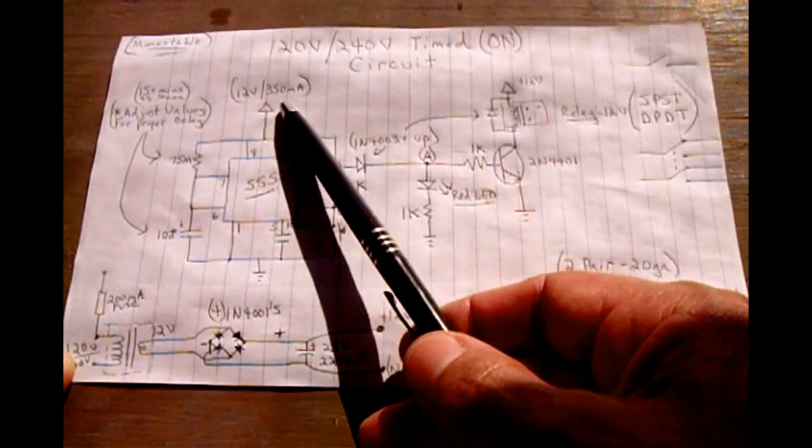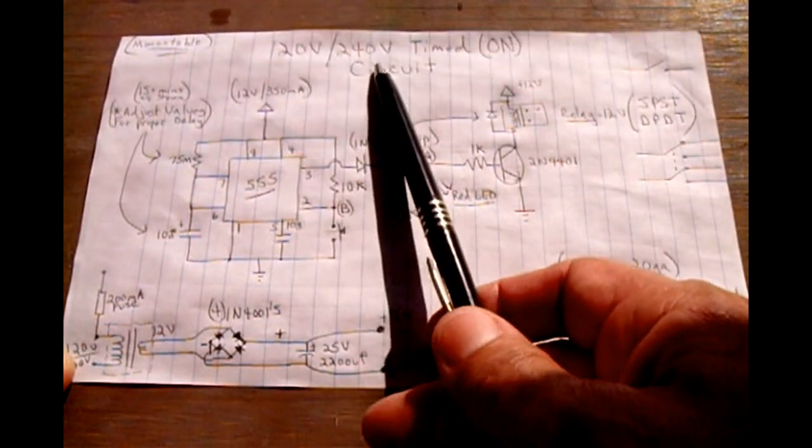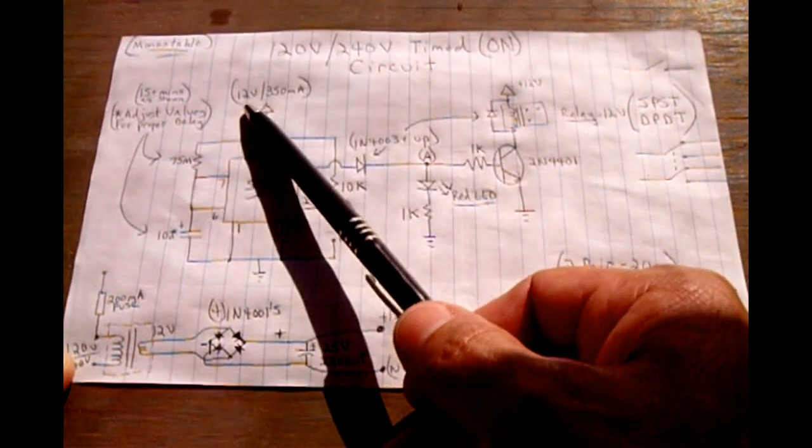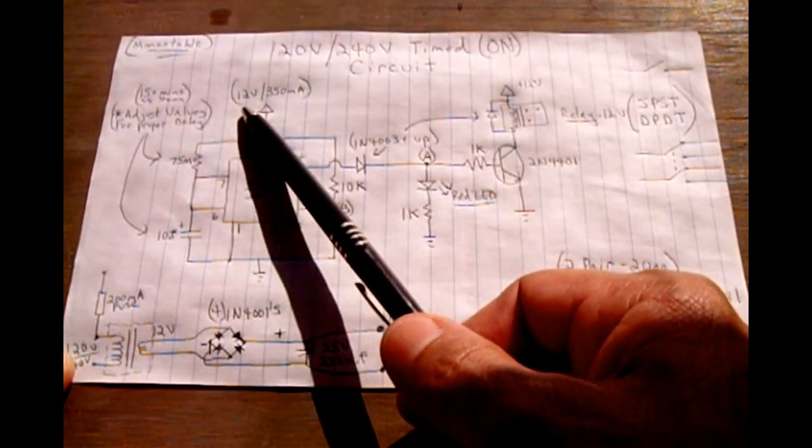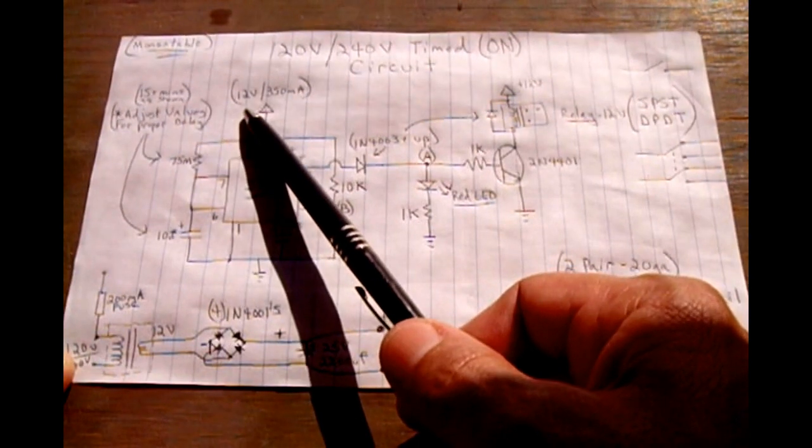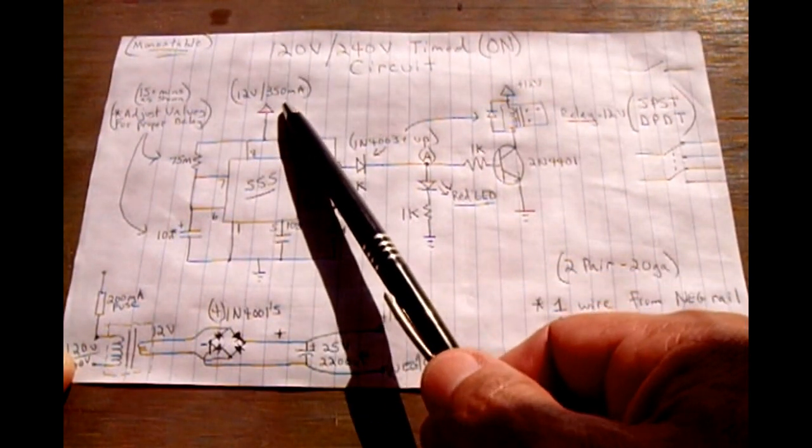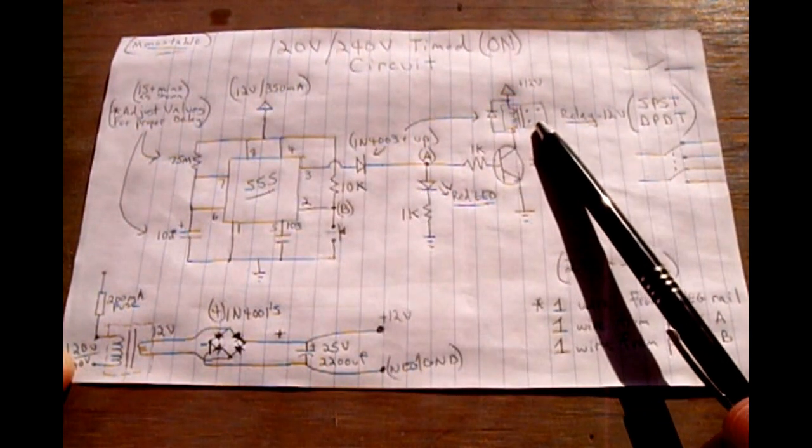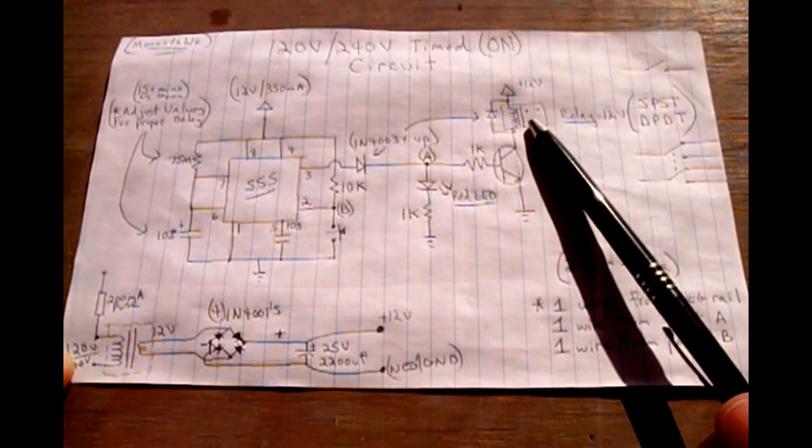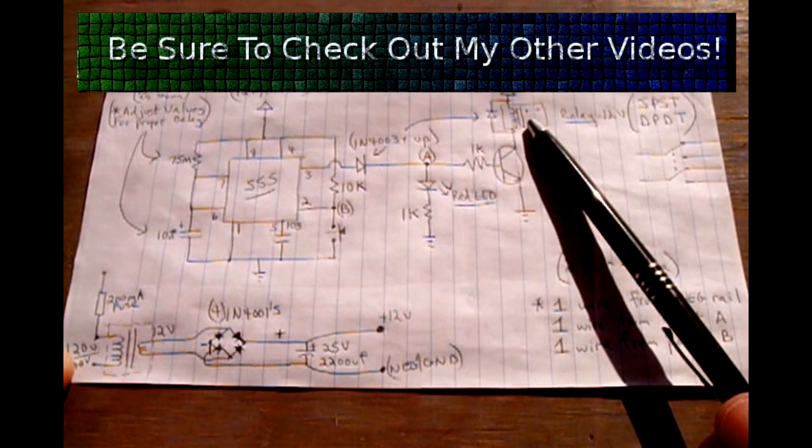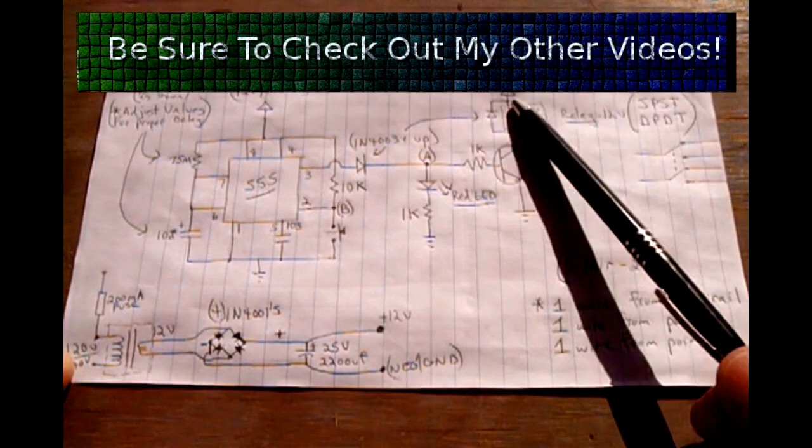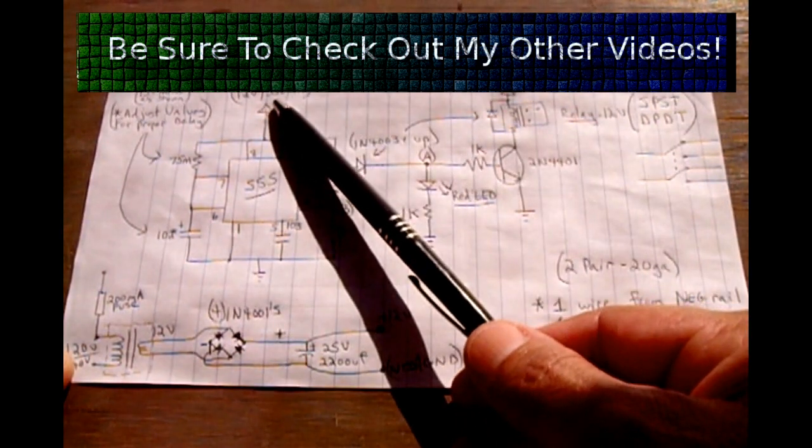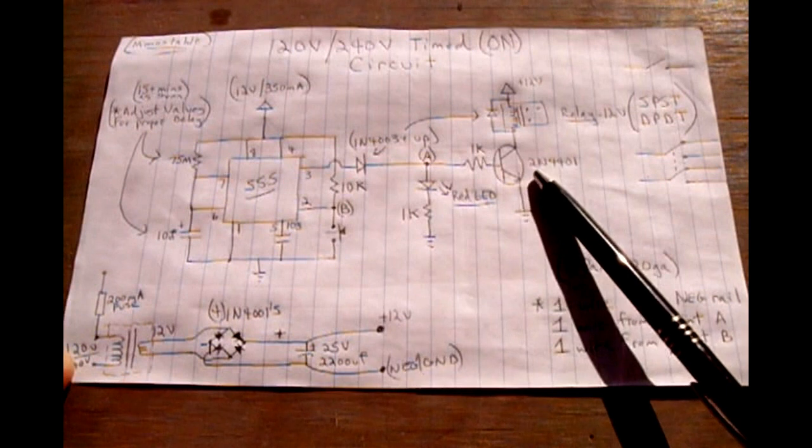Whatever circuit you're using the power from, in my case it's being powered from the water heater circuit which is 240 volts, so I use a 240-volt step-down transformer to 12 volts, and the current rating of the transformer is 350 milliamps. Whatever relay that you use, make sure it can handle the current of the load, or in my case the water heater, and make sure that the relay coil, the current that the coil draws, will not exceed the rating of the transformer or this transistor.